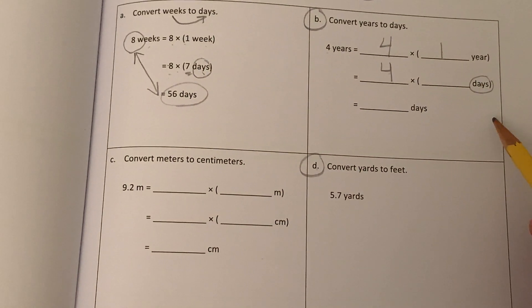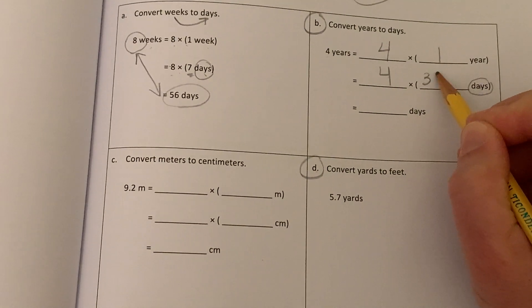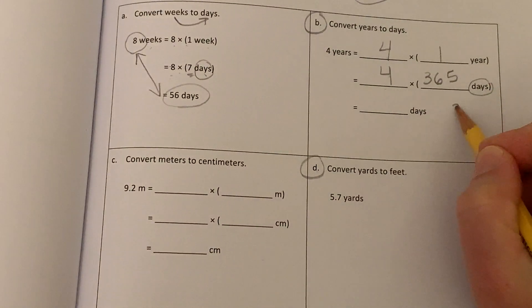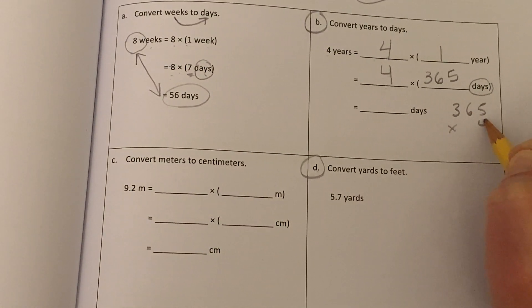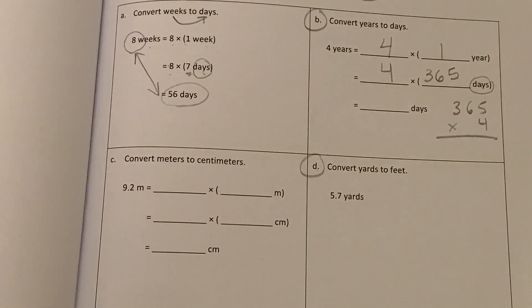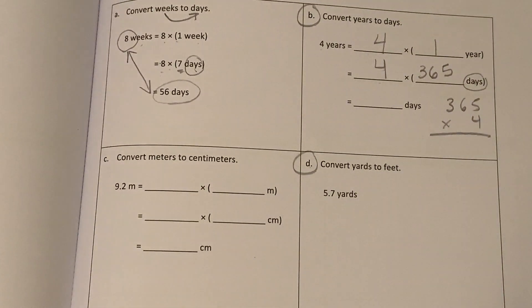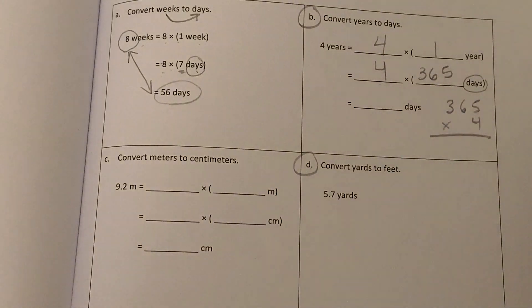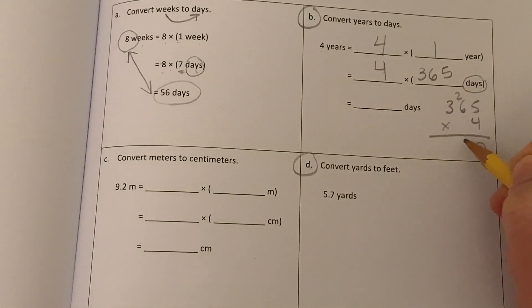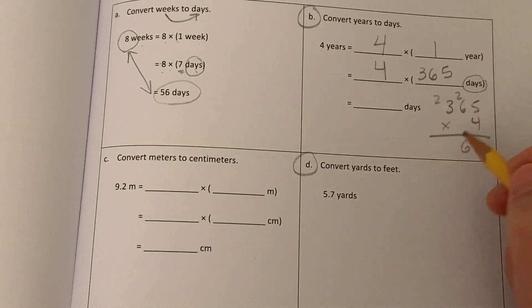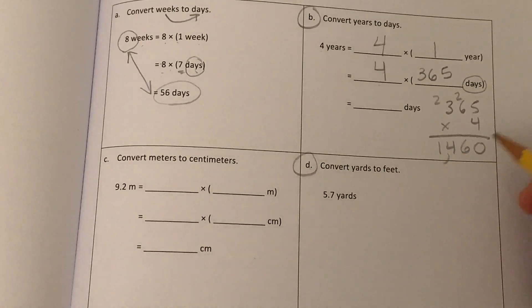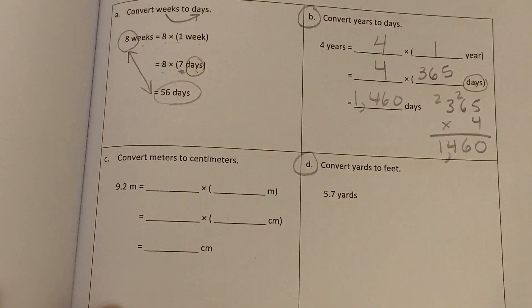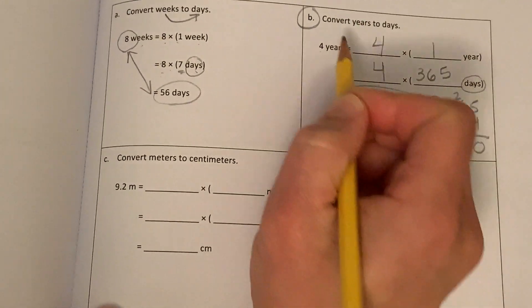So basically, they were just copying the number in front of the word. So eight weeks, they put an eight. So here we would put a four. And then they would put a number one for year, just like we did a one for a week. And then below, just like they put the eight, we would put the four again. And then we have to know how many days are in a year, just like they knew how many days were in a week. So remember how many days are in a year? That's right, 365. And now we do our multiplication, but you want to line it up vertically. Go ahead and solve that and put your final product. Is that what you got? 1,460 days is equal to four years.